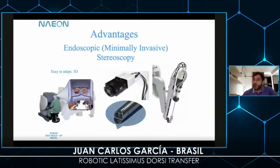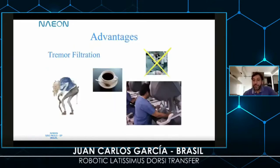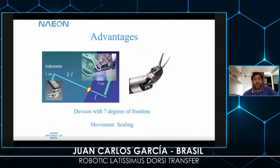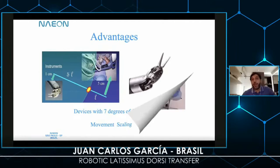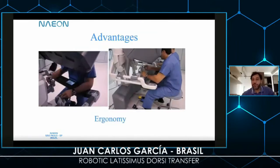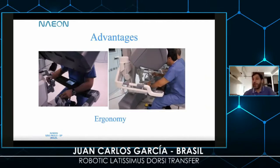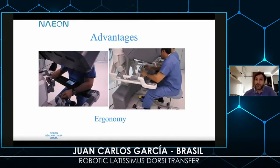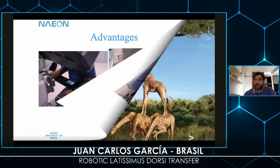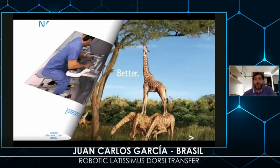The advantages of robotic surgery are the endoscopic minimally invasive approach, stereoscopic 3D view, tremor filtration, and a device with seven degrees of freedom that makes it very simple to manage. The device works like a hand — it's like you are using stitches or some device you use every day in open surgery — and of course, ergonomy, because I want to make surgeries until 80 years old.